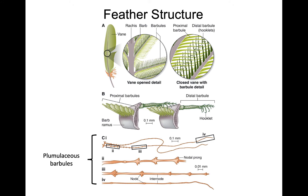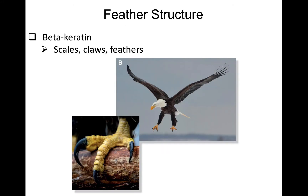That's what happens in the pennaceous region. In the plumulaceous region, the barbules coming off the barbs don't have this hooklet structure. They're oftentimes longer and more thread-like in appearance, so they don't have the capability of forming that nice integrated, vane-like smooth surface.